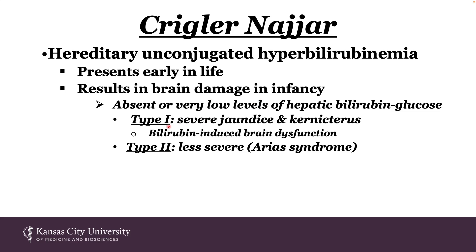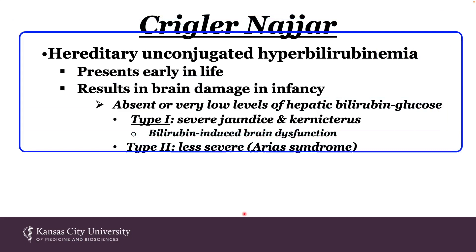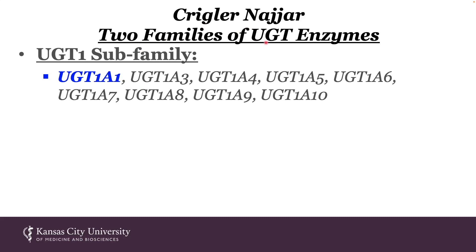This condition presents early in life and can result in brain damage in infancy. There are two types: type 1 is characterized by severe jaundice and kernicterus, which is bilirubin-induced brain dysfunction. Type 2 is less severe, also referred to as Arias syndrome. In order to understand Krigler-Nyar, you need to understand families of UDP-glucuronosyl transferase enzymes — a phase 2 enzyme whose function is to stick sugar groups on foreign compounds, drugs, bile acids, and other endogenous biomolecules. This family is key in converting fat-soluble drugs into water-soluble compounds that can be excreted.